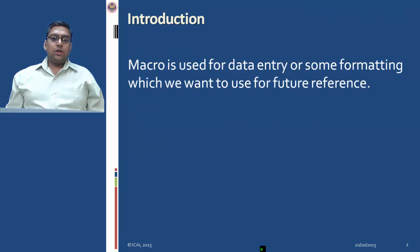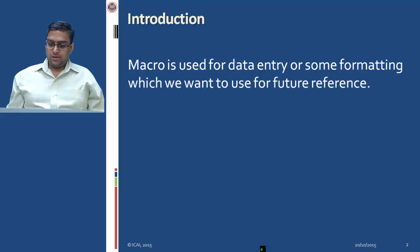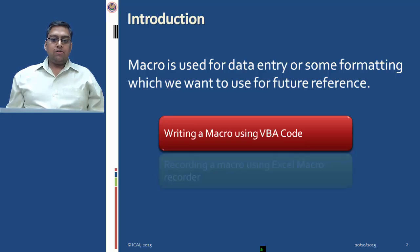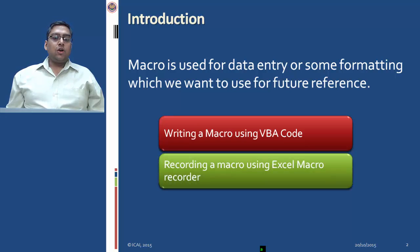Starting with the introduction: a macro is used for data entry or some formatting which we want to use for further reference. A macro is written in two ways. First is writing a macro using VBA coding, and second is recording a macro using the Excel macro recorder.